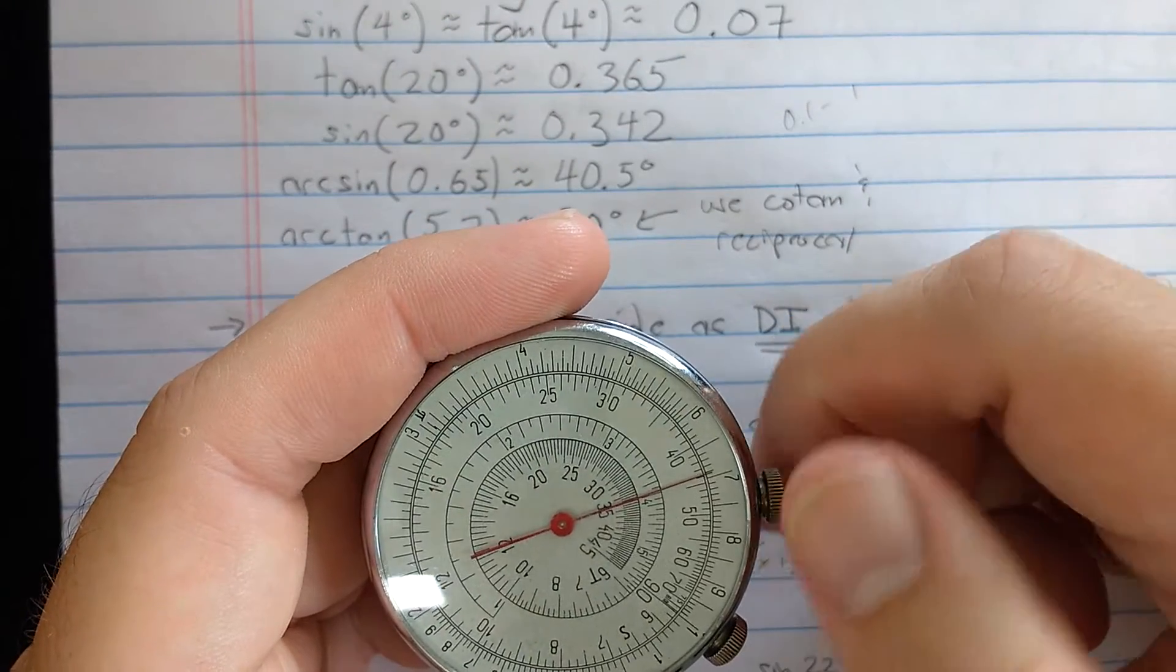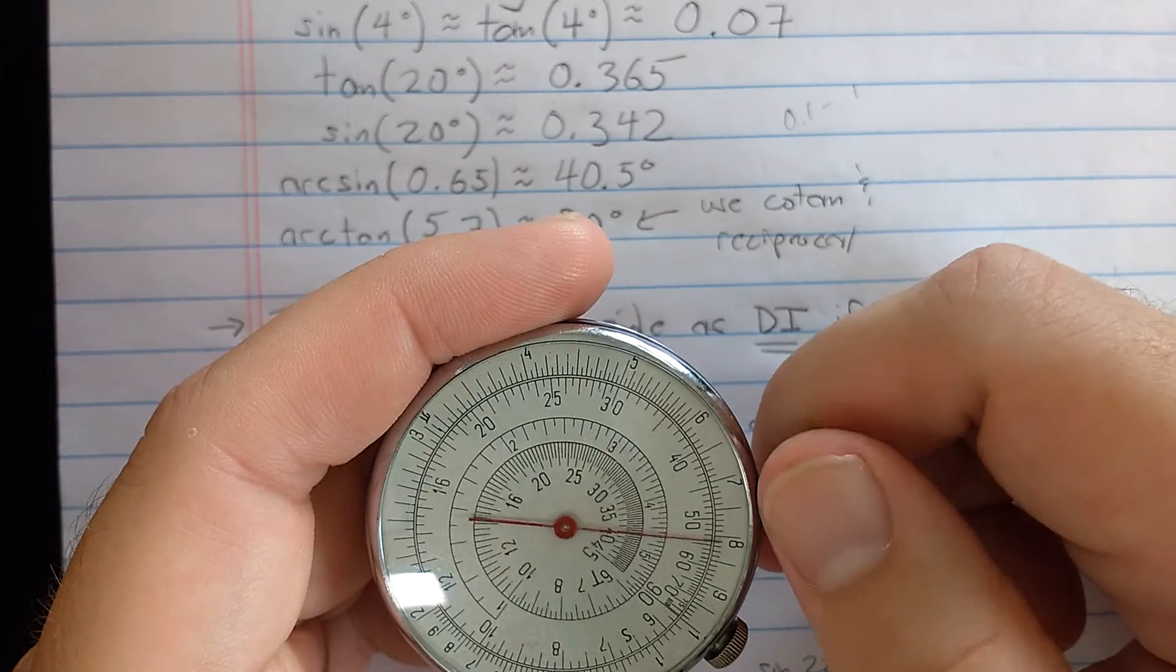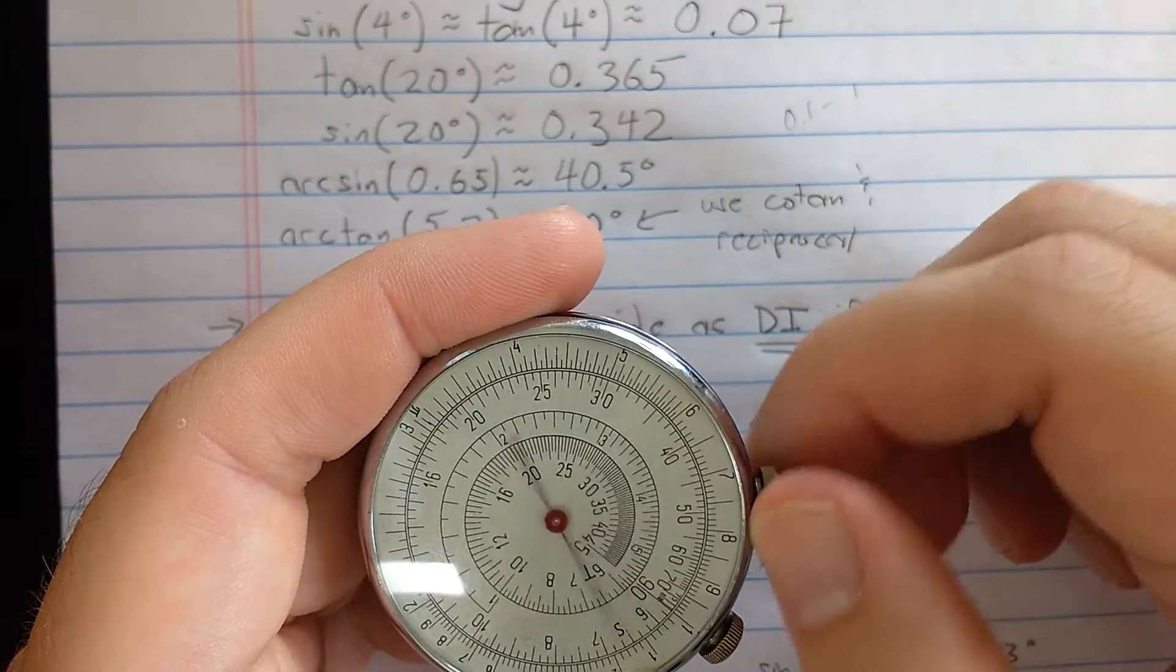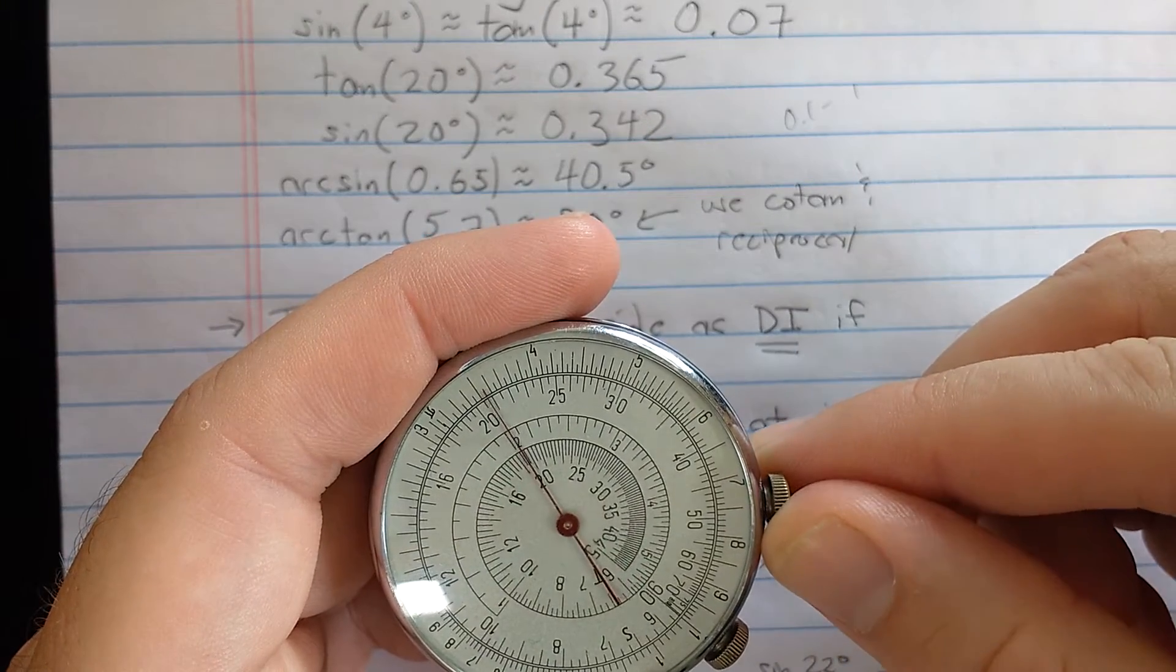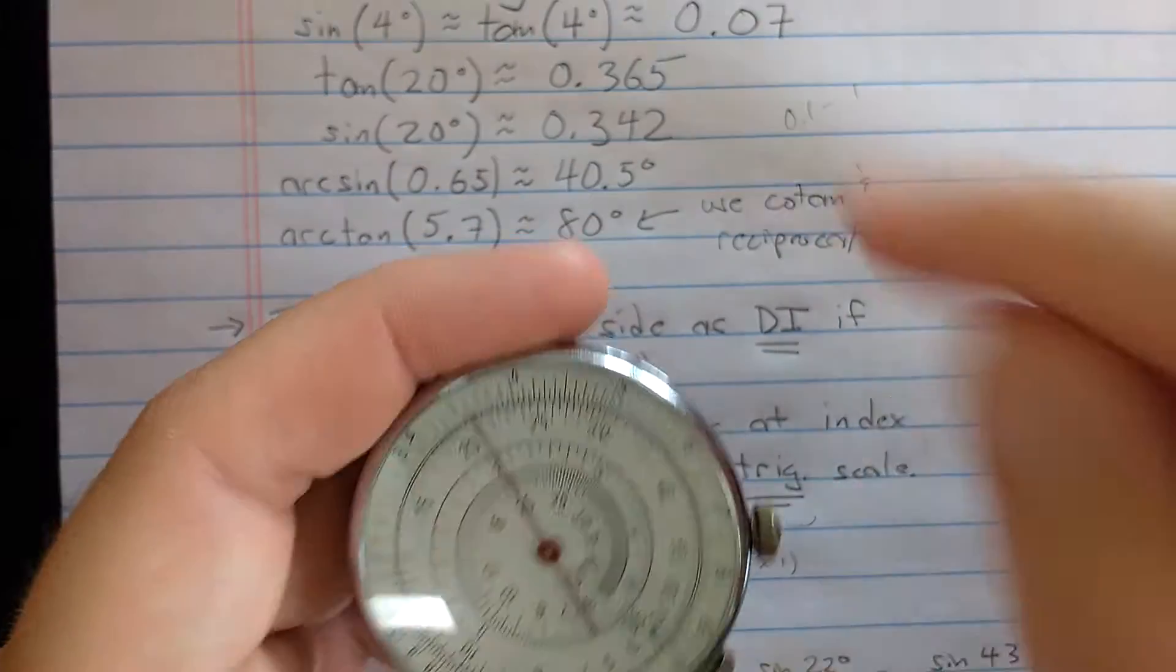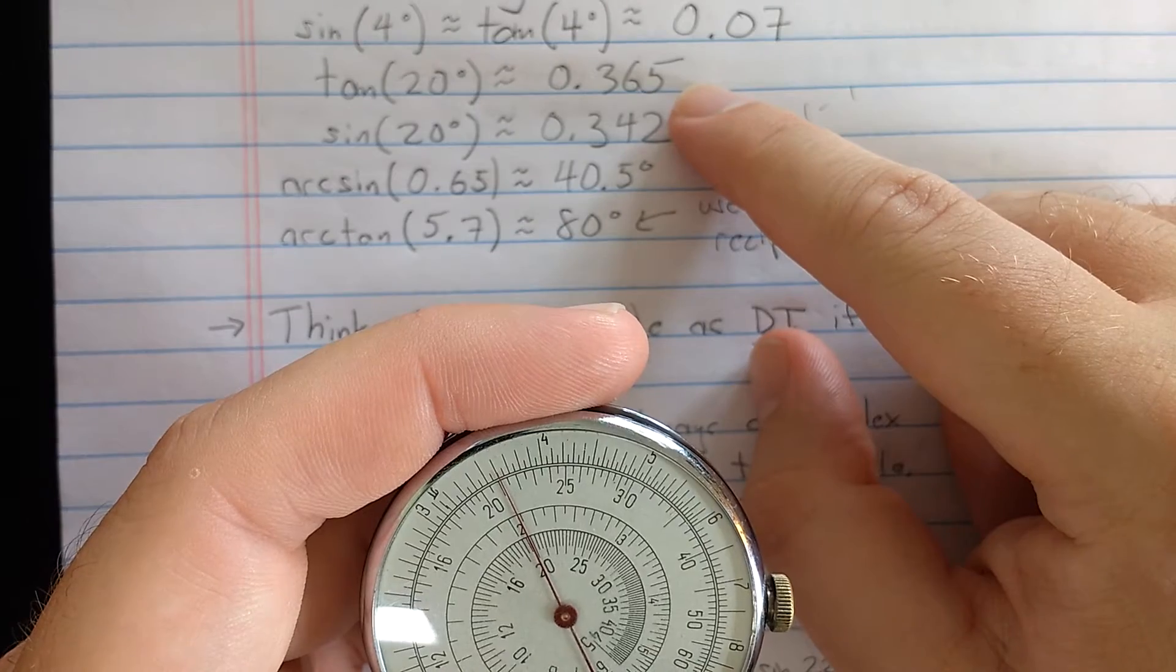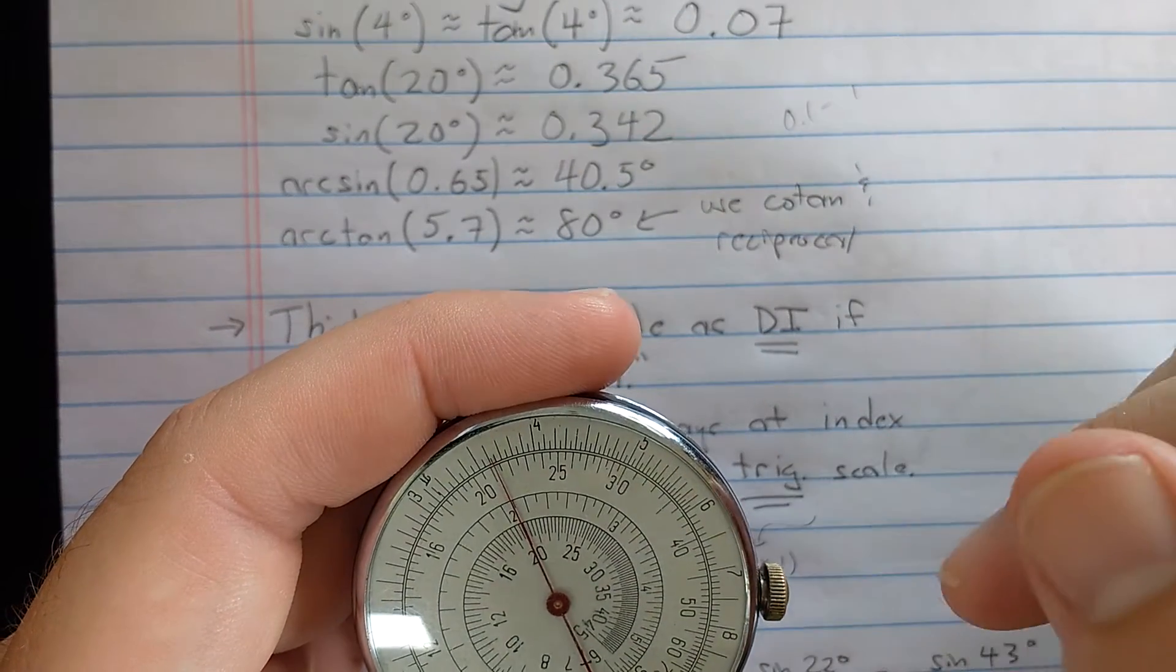If you continue around the spiral past this mark, the 5.7 mark, it continues with tangents. So if you come around to 20 degrees, you get about 0.365 on the outer scale.